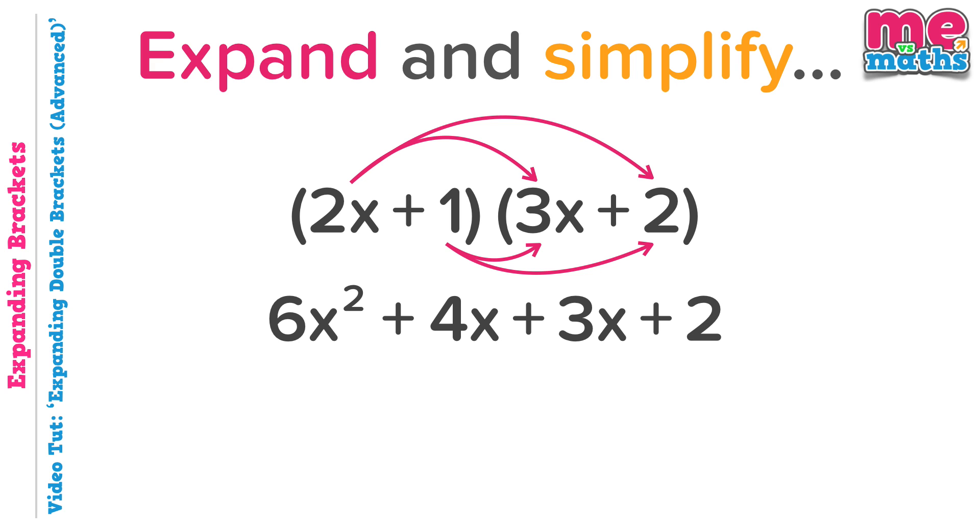All positives here so no need to worry about the signs too much in this particular question. Now let's simplify the part that we can. 4x plus 3x equals 7x. So here it is in our final simplified solution.